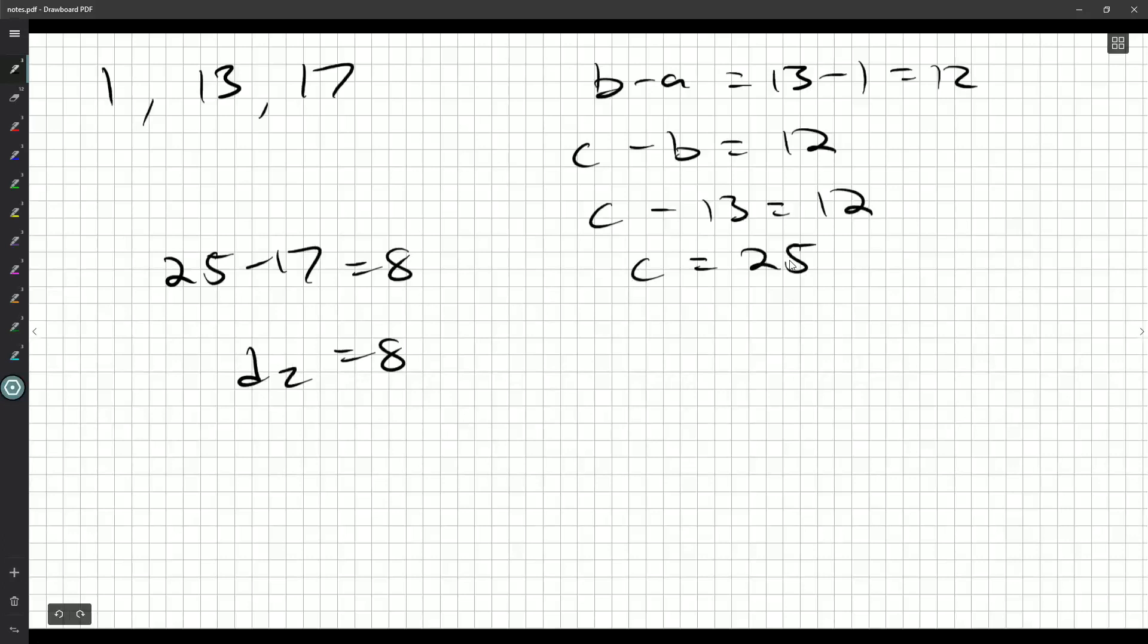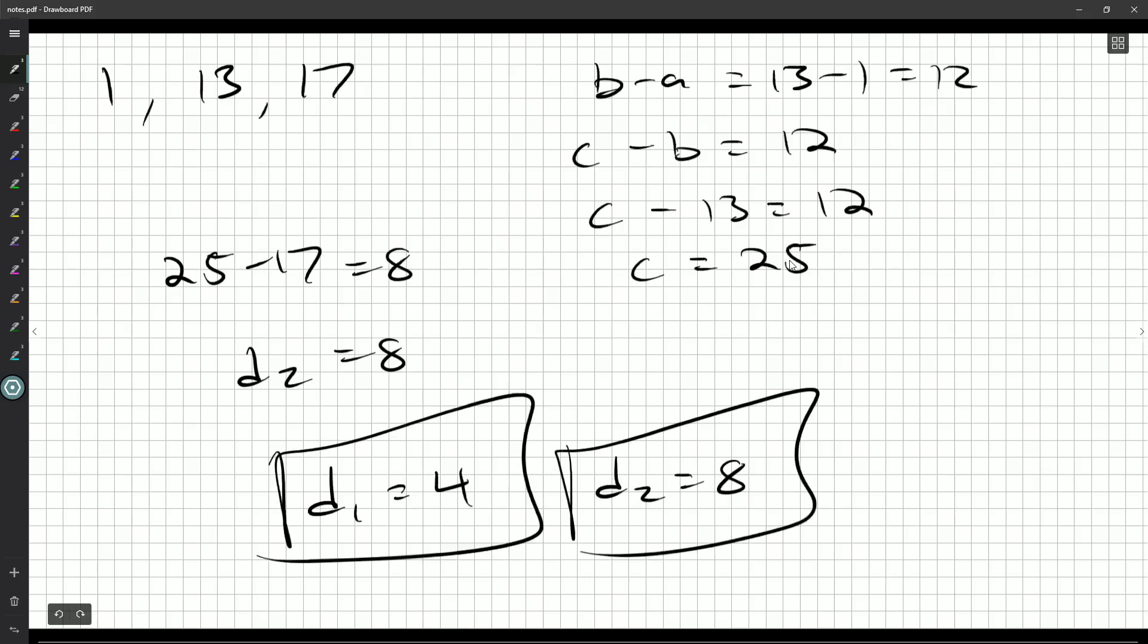We also have, so if we're starting with 1, 13, and 17, B minus A is 13 minus 1, which is 12. So C minus B needs to be equal to 12. So C minus 13 needs to be equal to 12. So C needs to be equal to 25. 25 minus 17 is equal to 8. So D2 is equal to 8 because that's the positive value. We're not saying 17 minus 25 because they specifically say D1 and D2 need to be positive. So I would just summarize that. D1 is 4, D2 is 8. Nice, clear, easy to mark.